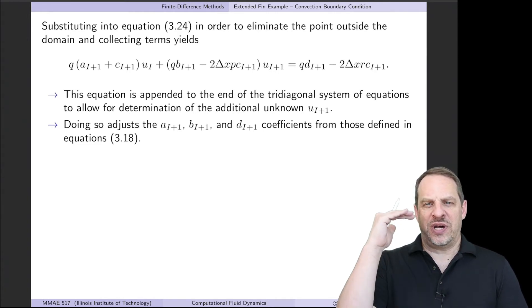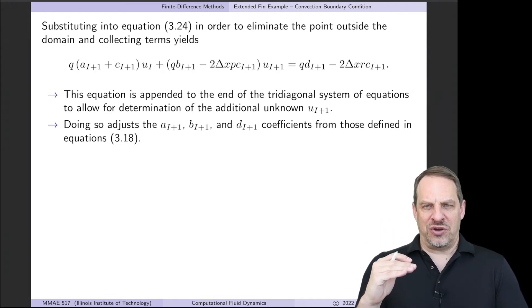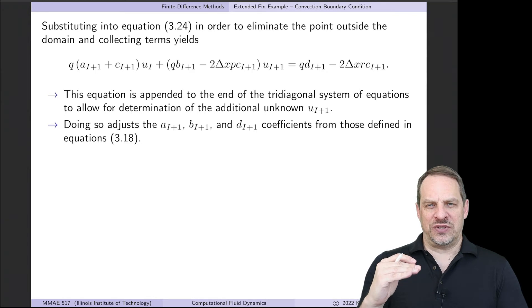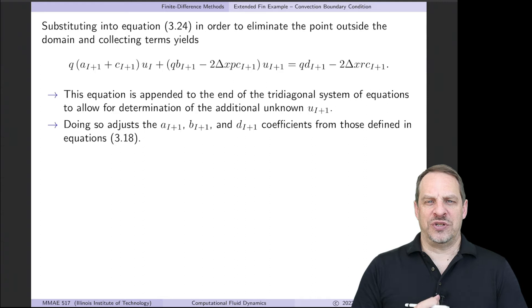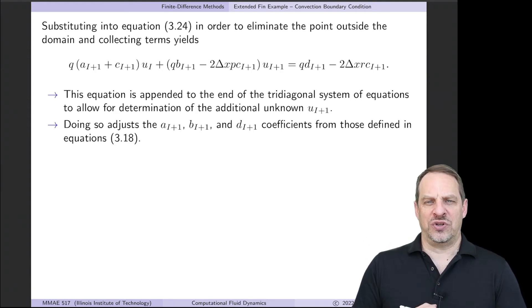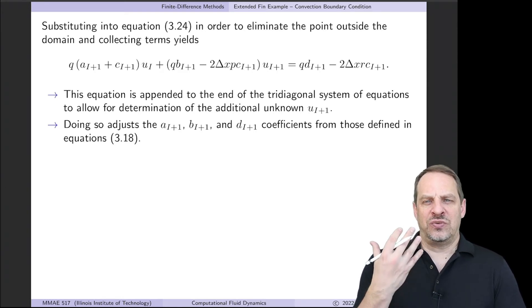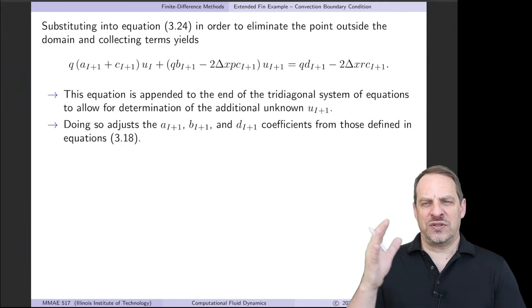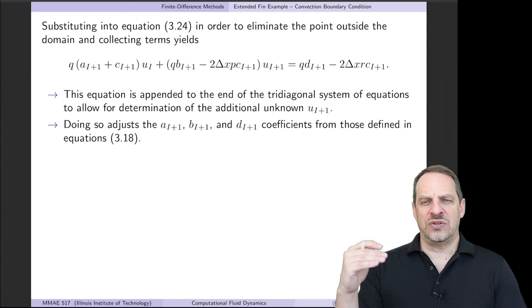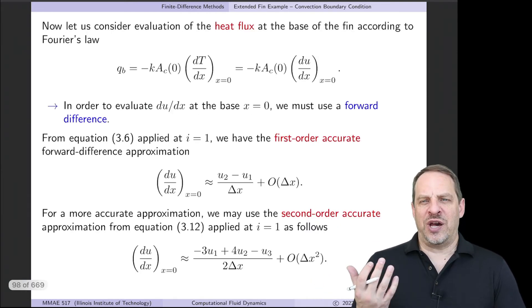That's all we have to do: apply the difference equation at the boundary, apply the boundary condition using appropriate finite differencing, solve for the ghost point value, and substitute back to give us an additional equation for the additional unknown. This same approach will be used for more complicated multi-dimensional problems in the future. Now, since this is a heat transfer problem, we'd typically want to know the heat flux — how much heat is conducted out of the base of the fin from, say, a hot computer chip we're trying to cool.